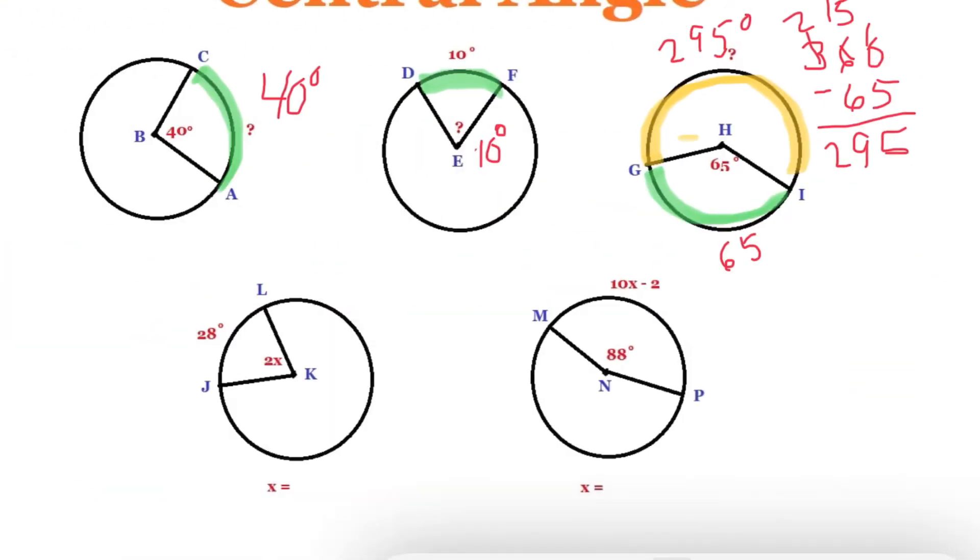Here they give us a variable 2x for the angle and the arc they say is 28. So to solve this, we set both equal to each other. So 2x equals 28, divide both sides by 2, x is equal to 14.